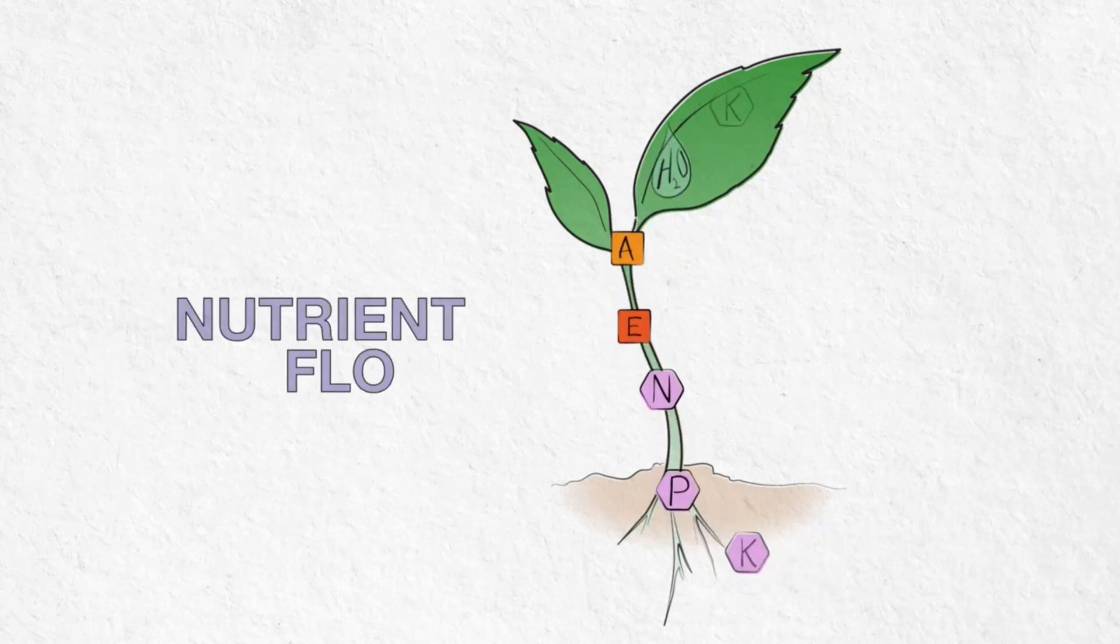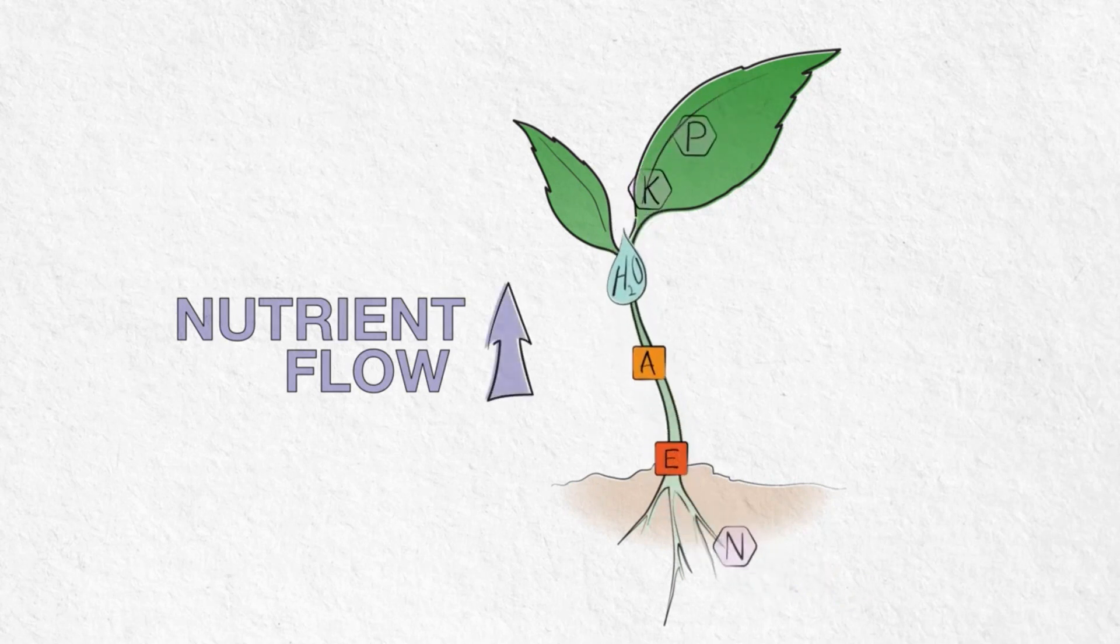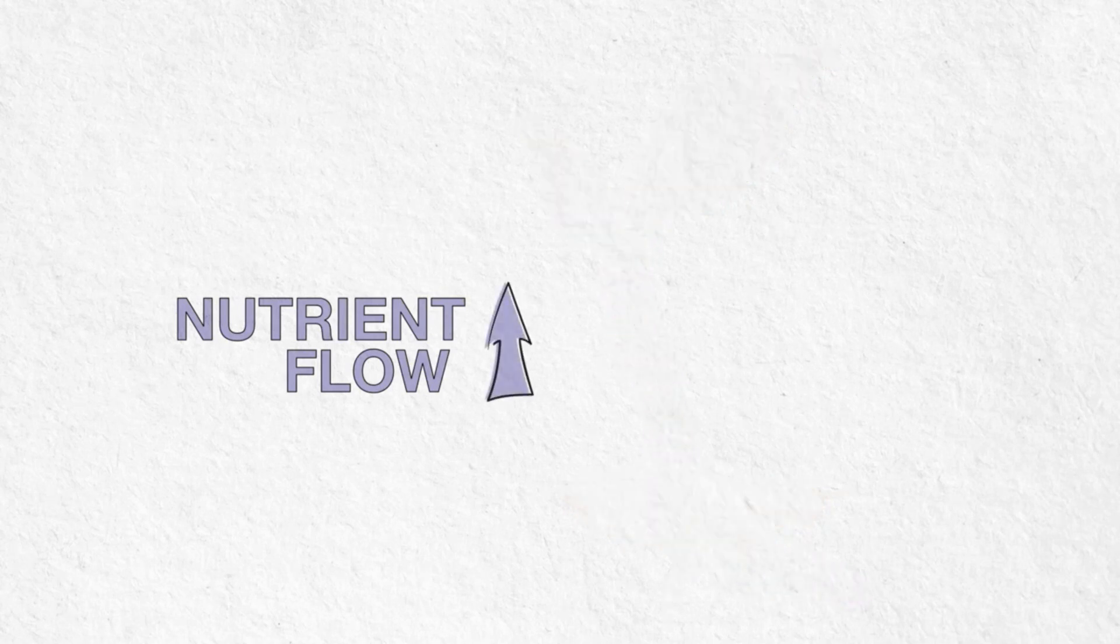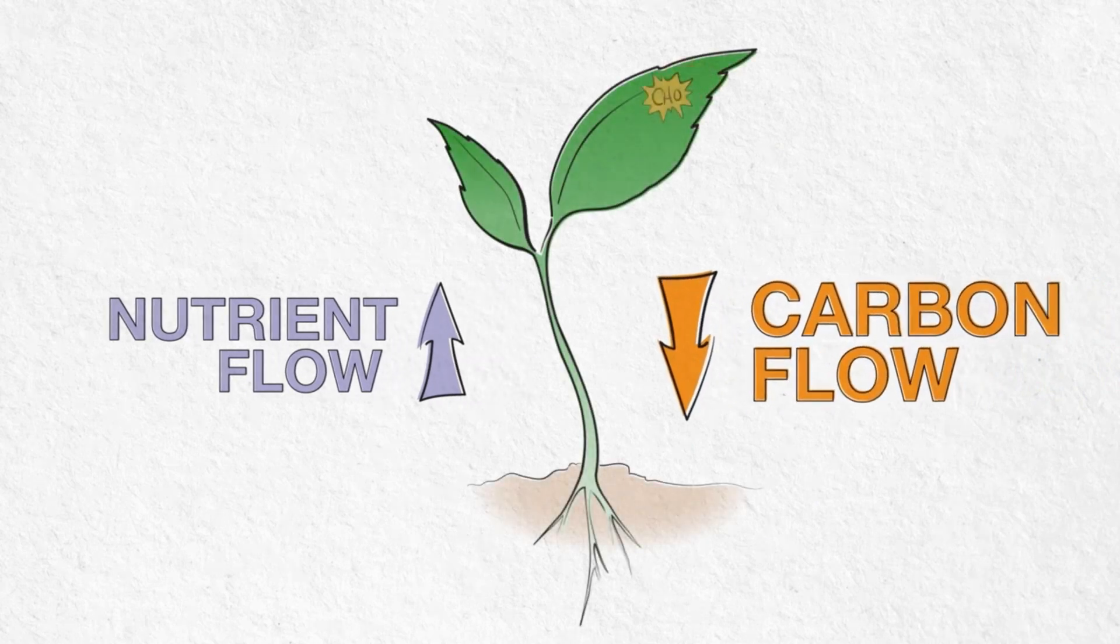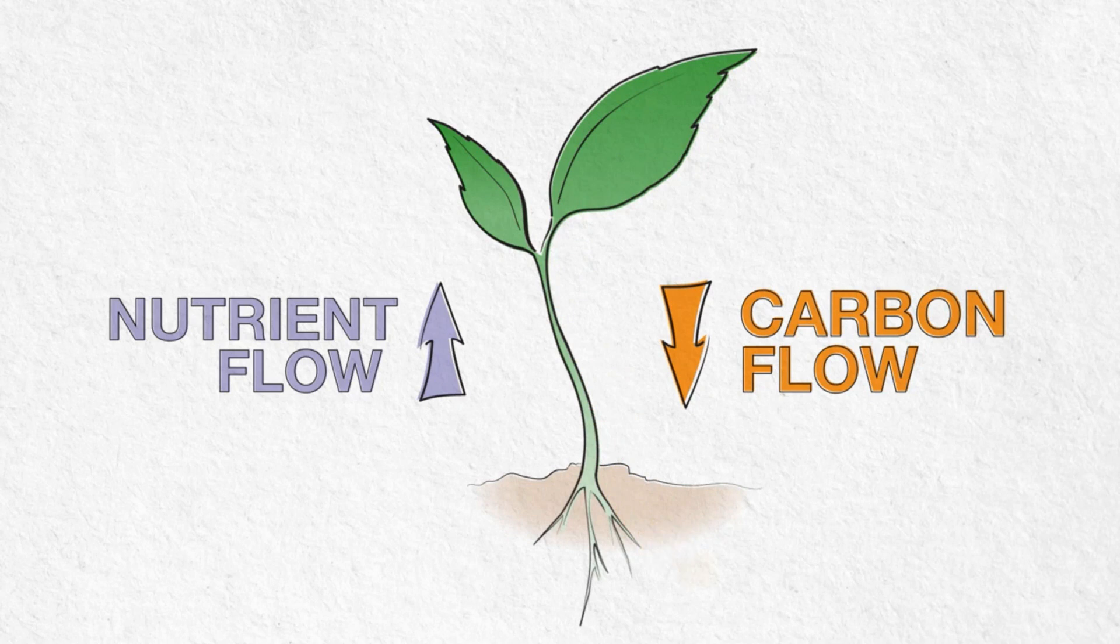This is the nutrient flow, moving upward in the plant from the roots to the leaves. While carbon flow and nutrient flow are intricately connected, carbon flow is the major determining factor for the plant.